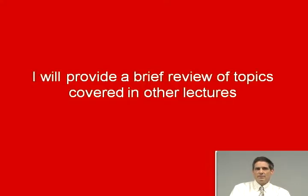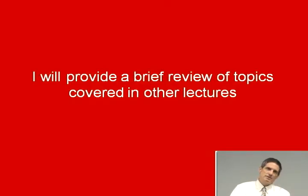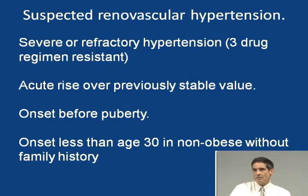First, a brief review of some of the topics I've covered elsewhere. How about suspected renal vascular hypertension? When do you suspect it? If you have severe or refractory hypertension — a three-drug regimen resistant — an acute rise over a previously stable value, onset of hypertension before puberty, or onset before 30 in a non-obese patient without a family history, then you should think in terms of renal vascular hypertension.